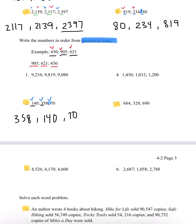Number 3, we have 4,526, 4,170, and 4,600. Each has the same 4,000, so we look at the 100s. We have a 5, a 1, and a 6. Since 6 is greater than 5 or 1, 4,600 is our greatest. Since 5 is greater than 1, 4,526 is in the middle, and our least is 4,170. The order is 4,600, 4,526, and 4,170.